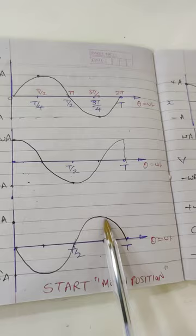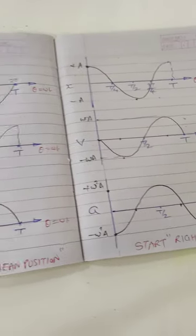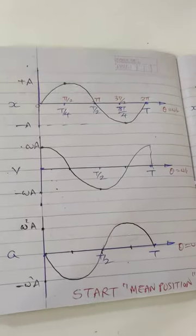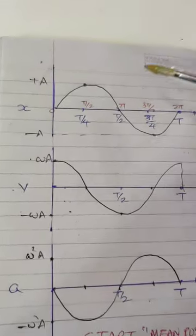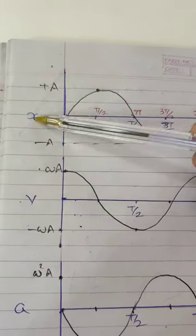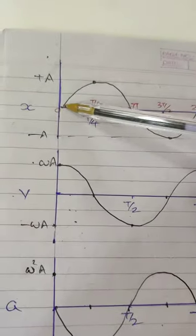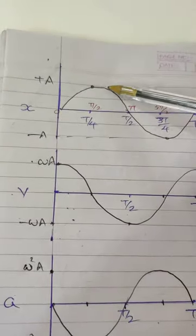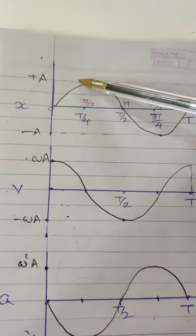Now the nature of the graph. For displacement starting from mean position, draw a standard sine wave like this. I'll explain everything properly — the nature of graph will be either a sine or cosine wave depending on the starting condition.